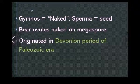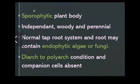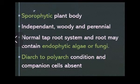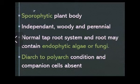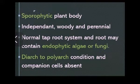The plant body of gymnosperms is sporophytic and diploid. It is independent and differentiated into root, stem, and leaves. It is woody and perennial. The root system is a normal taproot system, and the roots may often contain associations of endophytic algae or fungi. The root has diarch to polyarch condition, and companion cells are absent.